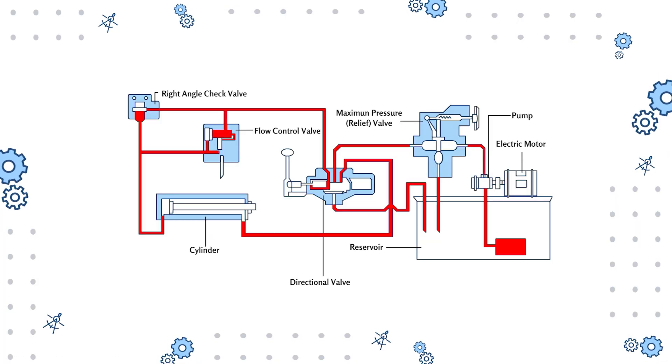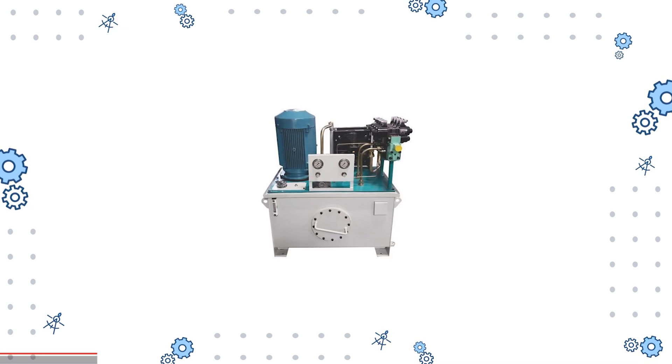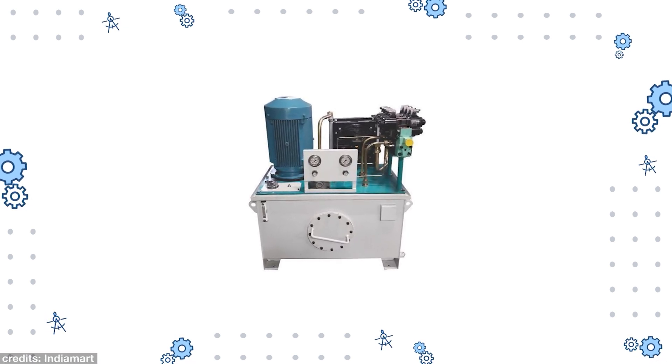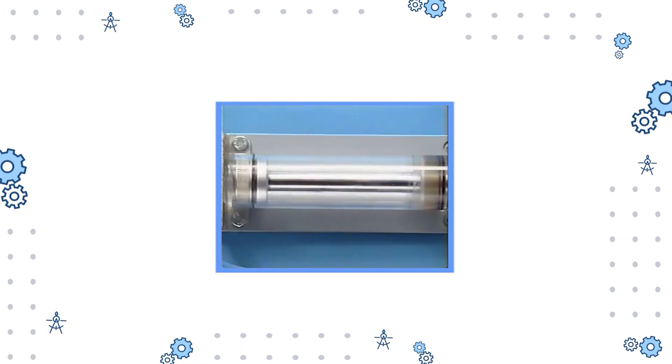All these individual components are connected with pipings. These pipes carry the oil around the circuit. A hydraulic power system can have multiple components depending on the requirement. Thus, the size of a hydraulic power system varies depending on the complexity of the circuit.